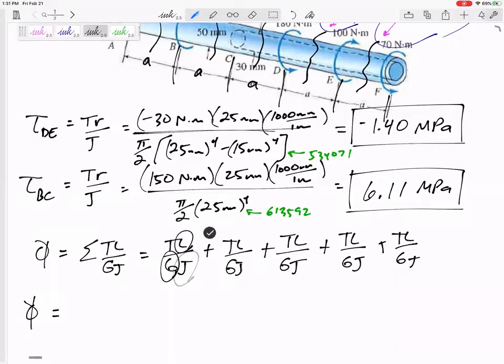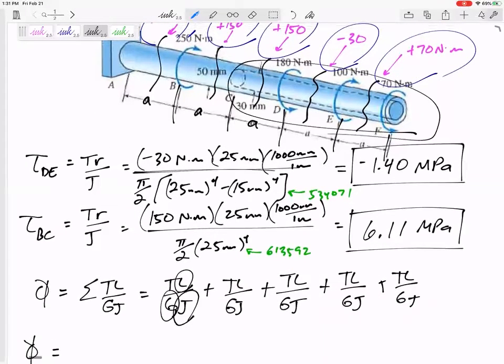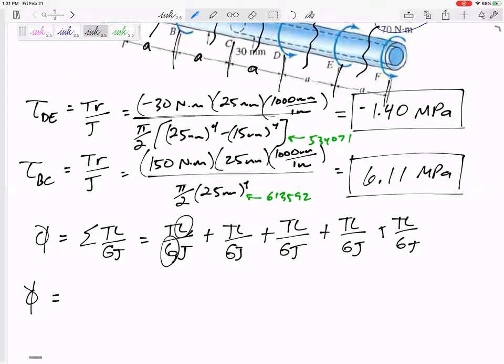Why not the J? Why not the J? Because this hollow portion has a different J than the solid portion. The hollow portion has a different J than the solid portion. But the length is all 100 millimeters. The G is all 28,000 MPa.